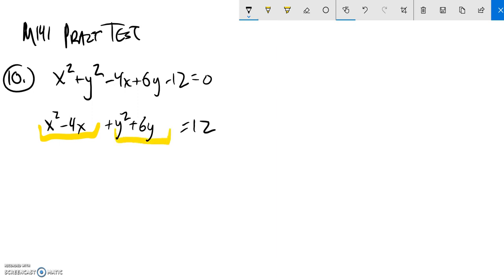Complete the square on the y's. So half of negative four is negative two. If I square that, that's four. So if I add four to this side, I'm going to have to add four to this side as well to keep it equivalent.